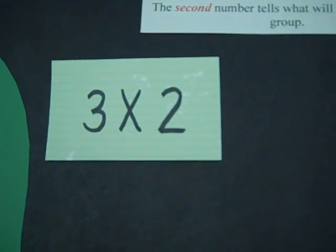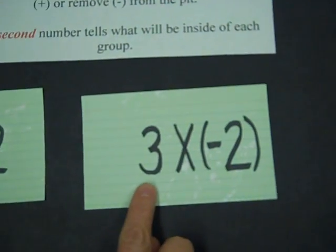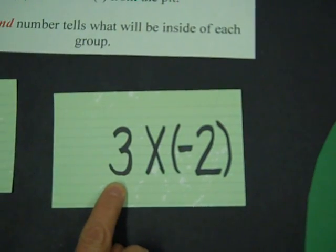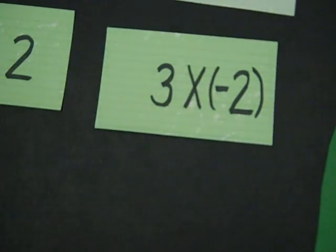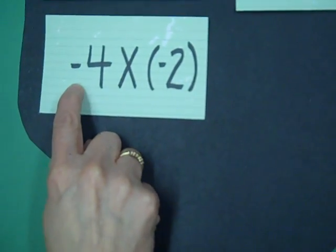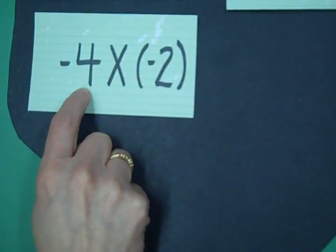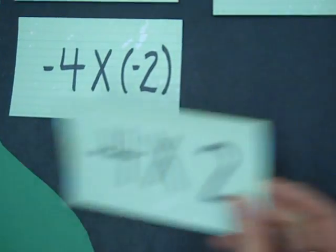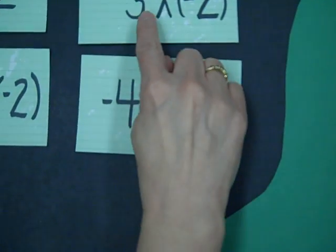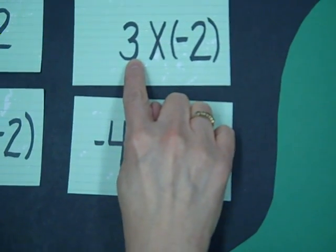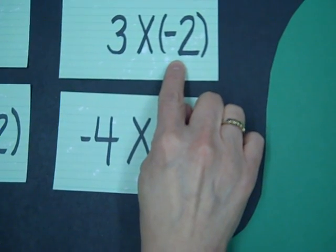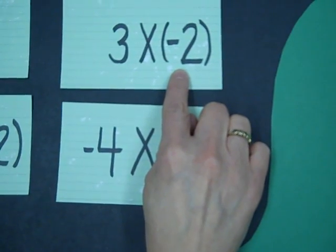Three times two, I'll be putting tiles in. Three times negative two, my first number is positive, so I'm going to put that into the pit. When it switches to a negative number, I'm going to be removing four groups. The three will tell us how many groups. The second number is going to tell us how many are inside each of those groups that I'm taking away.